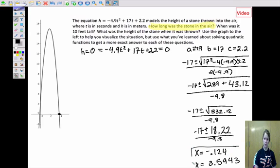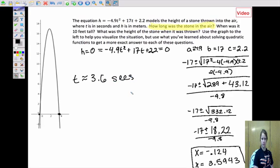All right, so the answers I got were x equals negative 0.124, so that would obviously be this root, and the positive 3.5943. So that's the root we're talking about. That's when it hits the ground. So we would answer this question by saying that it hits the ground when the time is approximately 3.6 seconds.